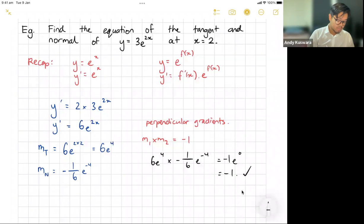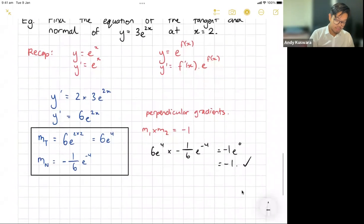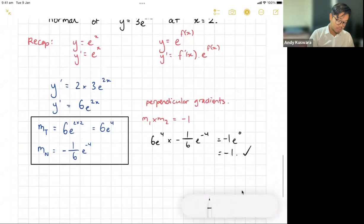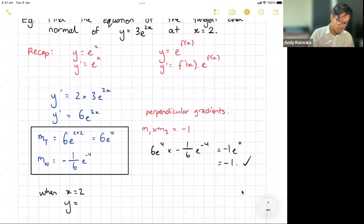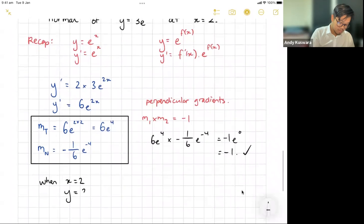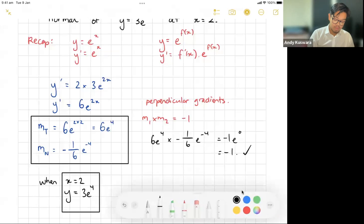That's going to be your gradient of your tangent, gradient of your normal. Now let's continue on here. I've got my gradients, I just need a point. When x equals 2, we need to find our y value, so it's just going to be 3e to the 4. So I'm just substituting that into my original. We now have a point, we now have some gradients.